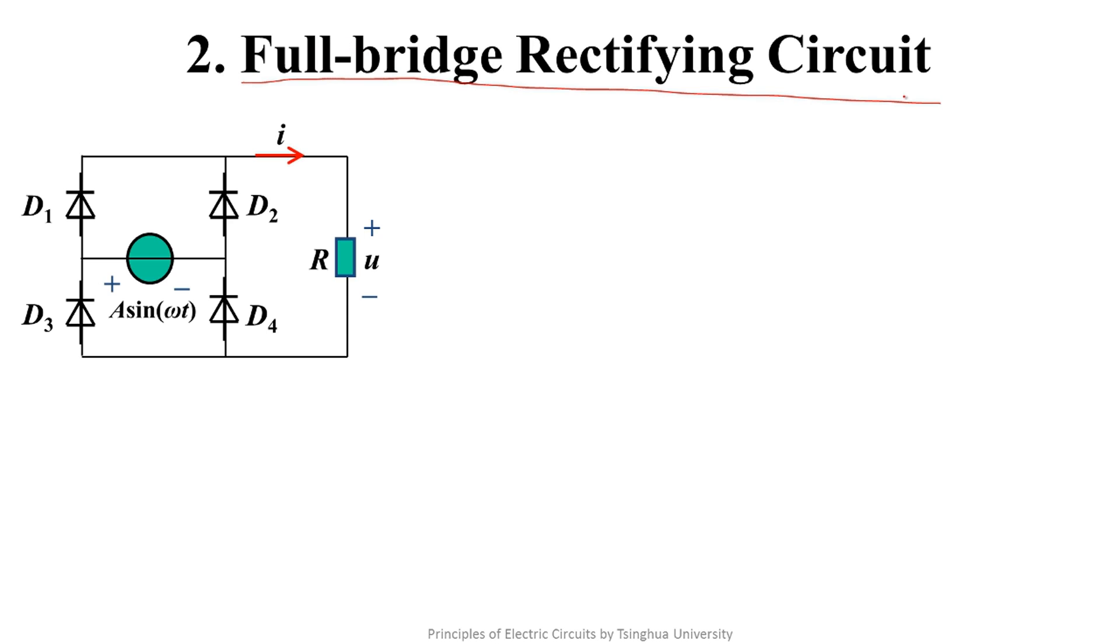Its name is the full bridge rectifying circuit. It is called the full bridge because there is a bridge circuit which consists of the source and four diodes.